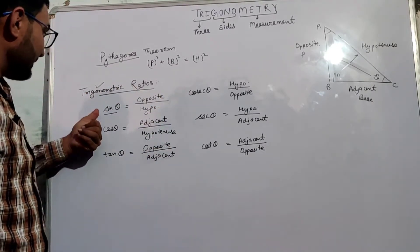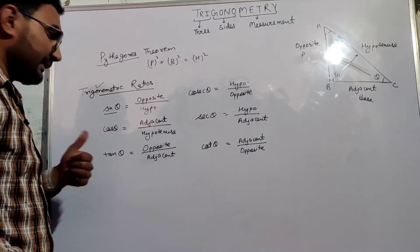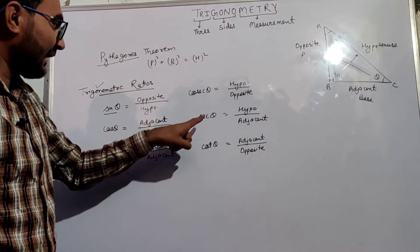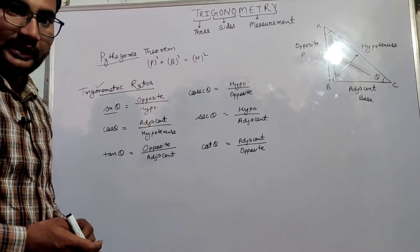The six trigonometric ratios are named as: sin theta, cos theta, tan theta, cosecant theta, secant theta, and cot theta.